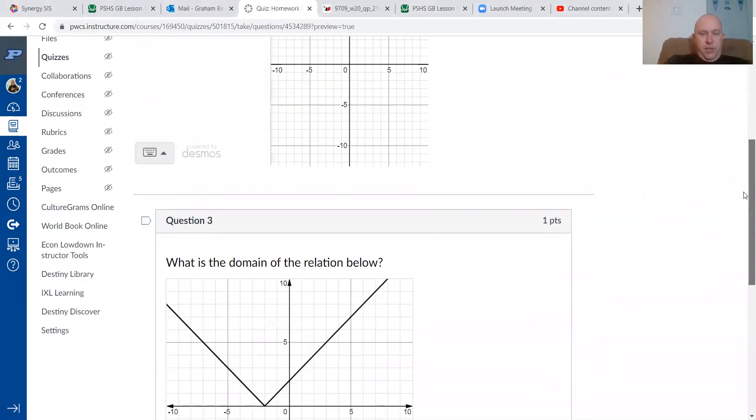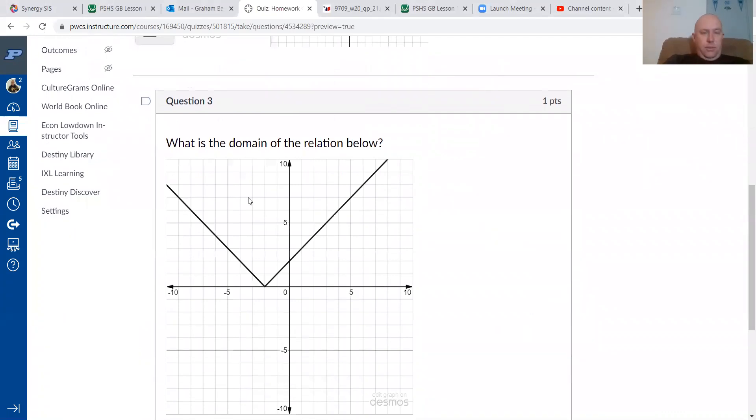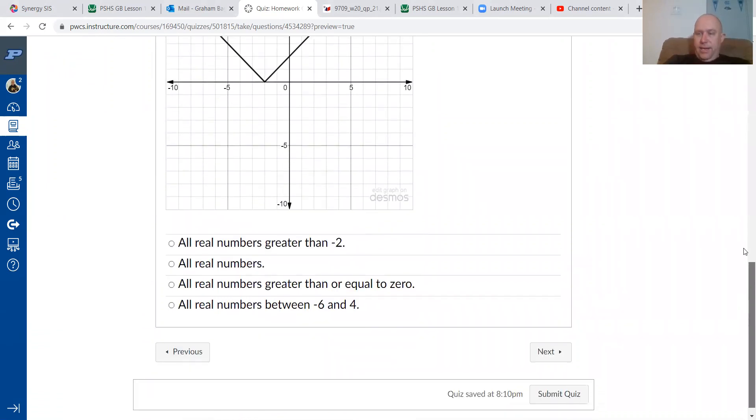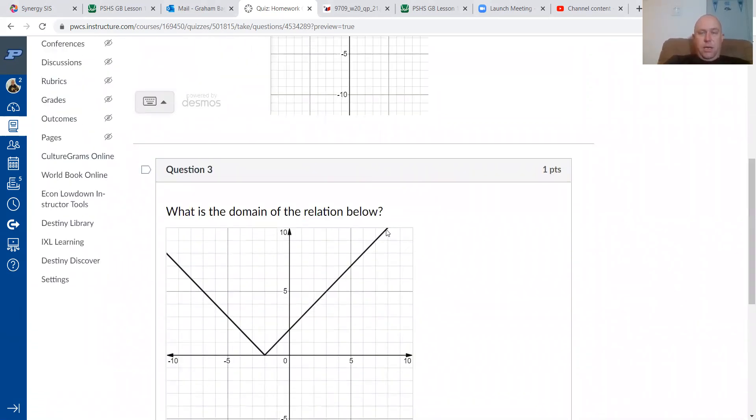What is the domain of the relation shown below? Now, sometimes for pictures like this, it looks very tempting. Like it looks like it stops here at negative 10, and it looks like it goes up to 8. And let's have a look at that as an option. See, that's not actually an answer for this question, which is good. Sometimes they'll draw an arrow on the end here to show that this graph continues. And sometimes they don't. They just assume by the edge of the paper here that this carries on this way, and this would carry on this way.